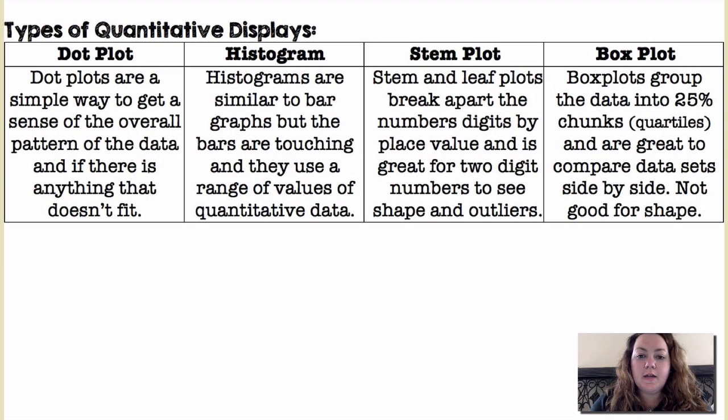Box plots group the data into 25 percent chunks which are called quartiles and are great for comparing data sets side by side. They're not very good for talking about the shape of the distribution.